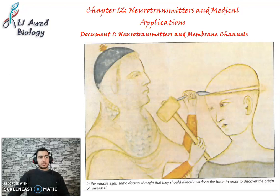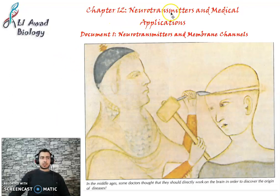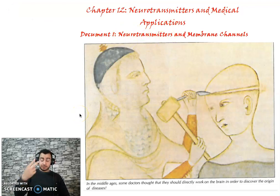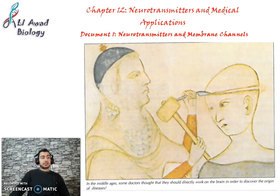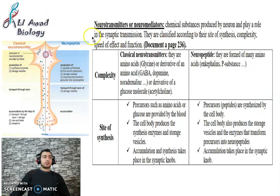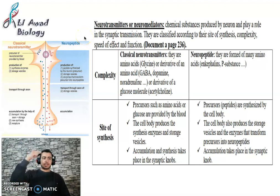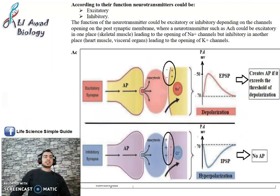Hello dear students, how are you? Today we are going to continue about chapter 12, document 1, neurotransmitter and membrane channels. This video is part 2. In the previous video, we explained the meaning of neurotransmitter and the types of neurotransmitters according to complexity, to the site of synapses, and we started with neurotransmitters according to function.